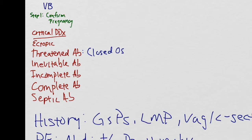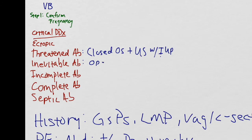In a threatened abortion, the OS will be closed and the ultrasound will show an intrauterine pregnancy. Depending on how far along the pregnancy is, a fetal heart rate can even be calculated. In an inevitable abortion, the OS will be open and the ultrasound will show an IUP.